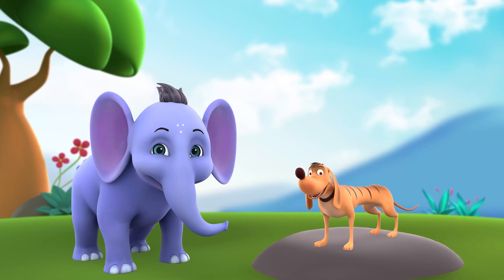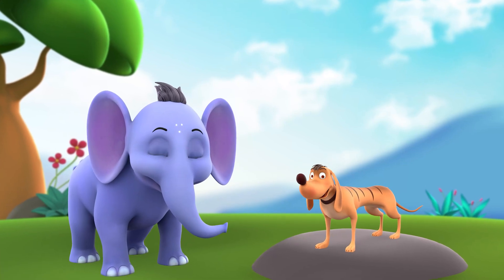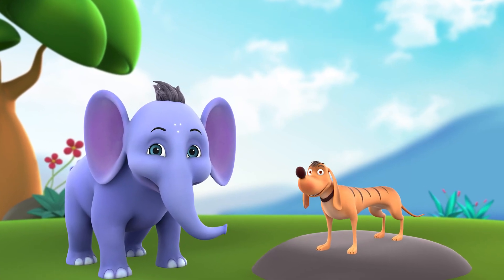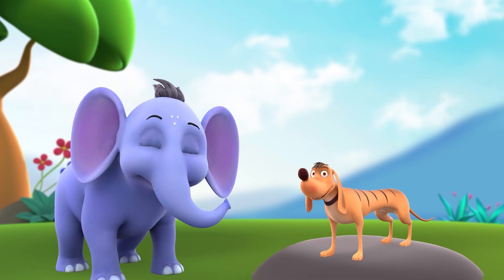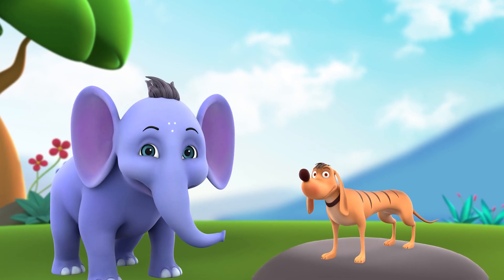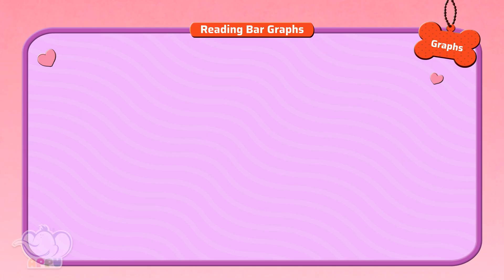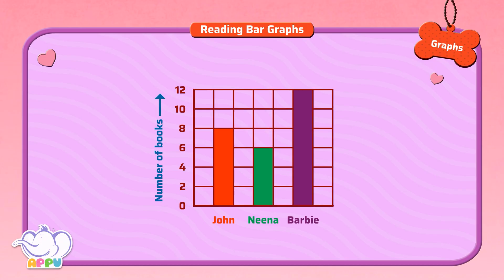Can we do one more example of reading bar graphs? Sure, let's do this one about reading books. We have three friends: John, Nina, and Barbie. The bar graph is about the number of books each of them have read.